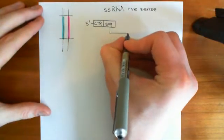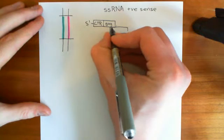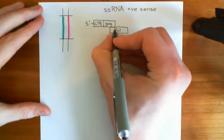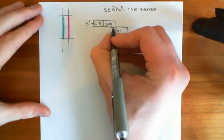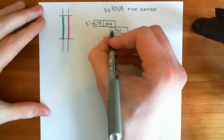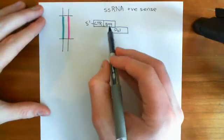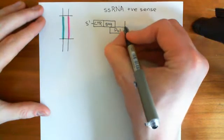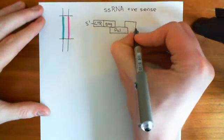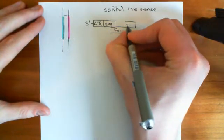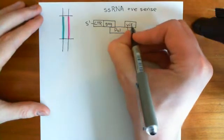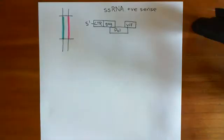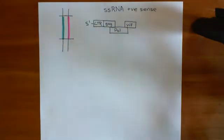Then we have POL here. Remember there was this overlapping, and the way that this made sense was because this gene was going to be read in a different frame. Then we have VIF over here, and I'm just going to talk about VIF in a moment, because VIF — the viral infectivity factor — actually helps the virus in the battle against APOBEC-3G that we've just been discussing.